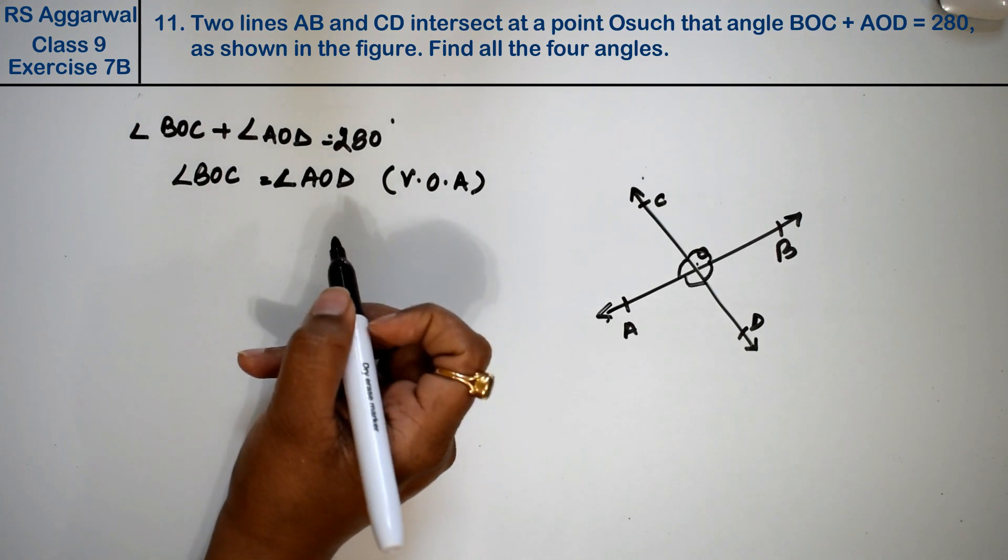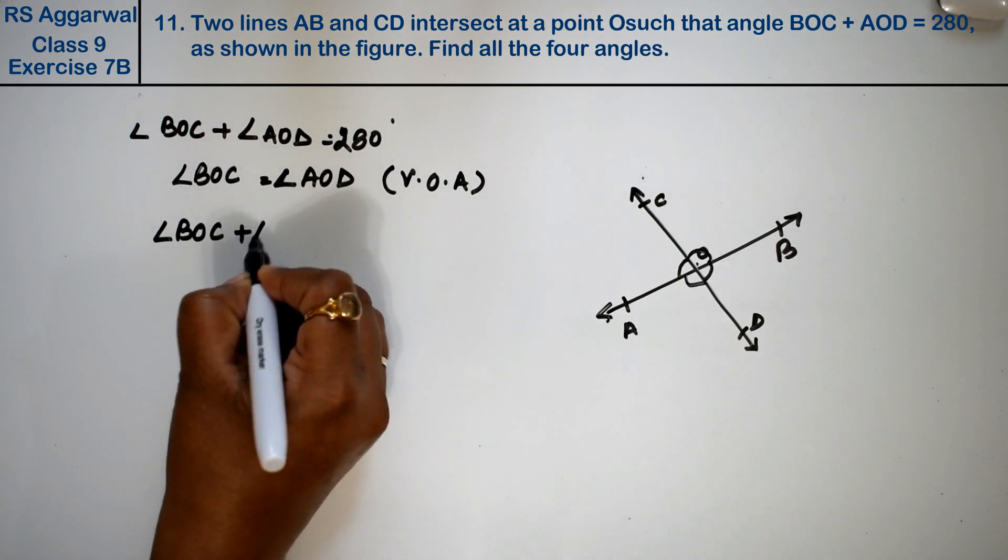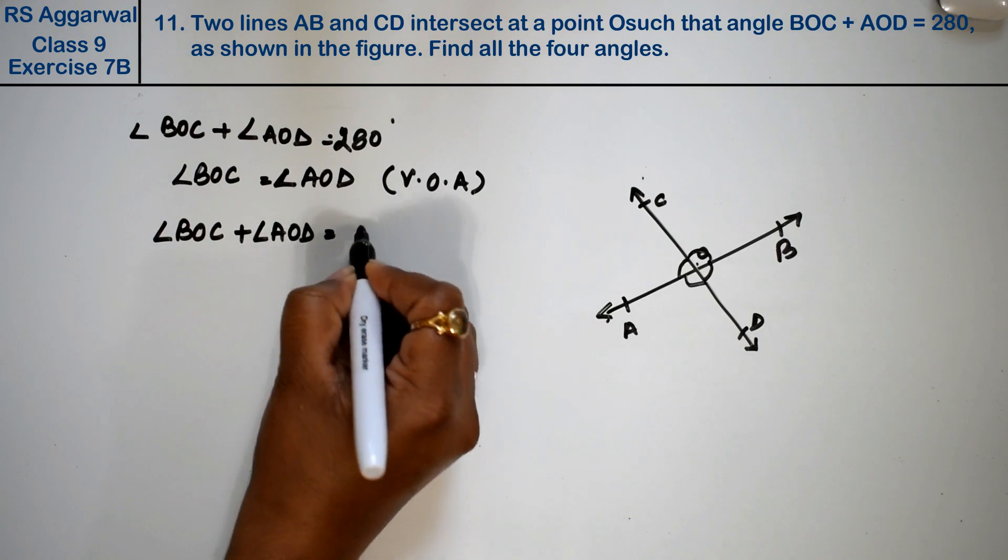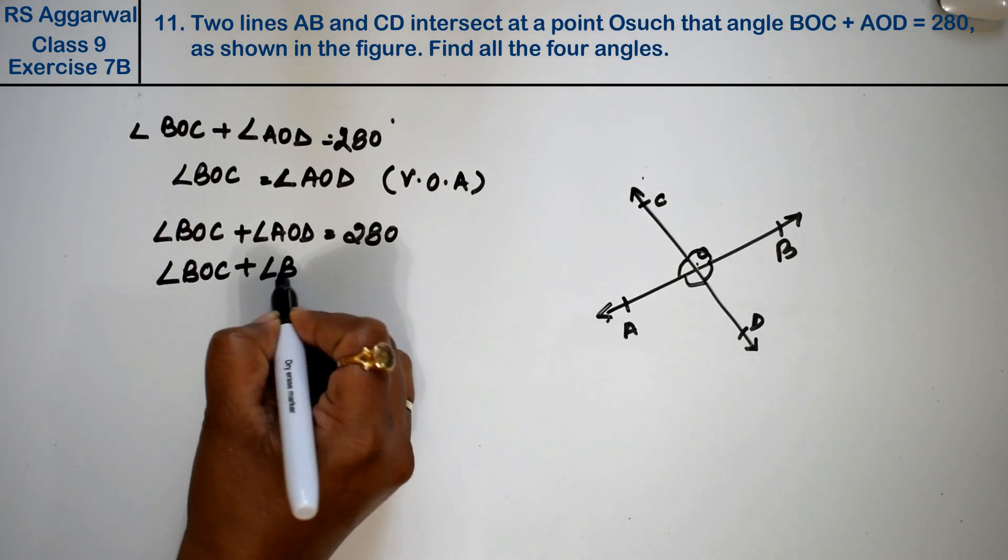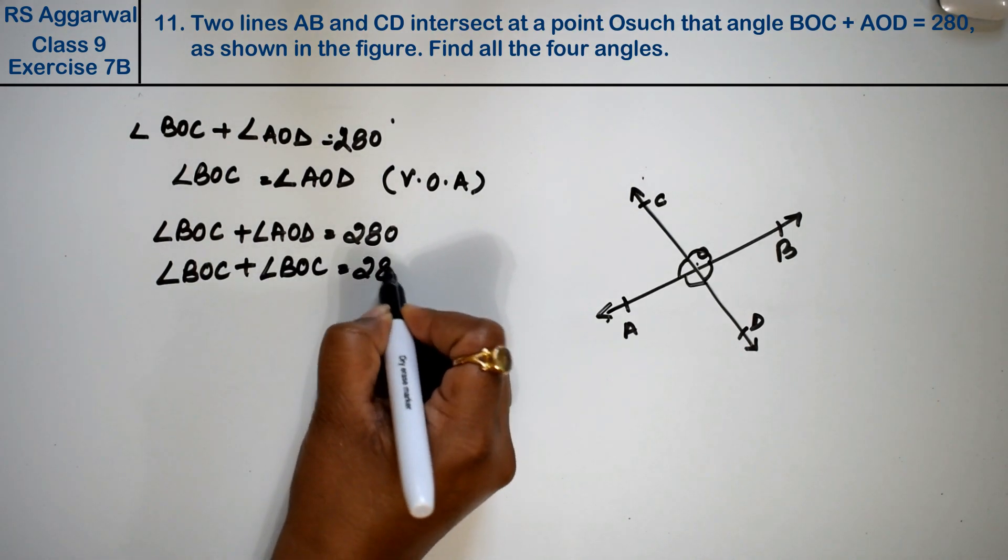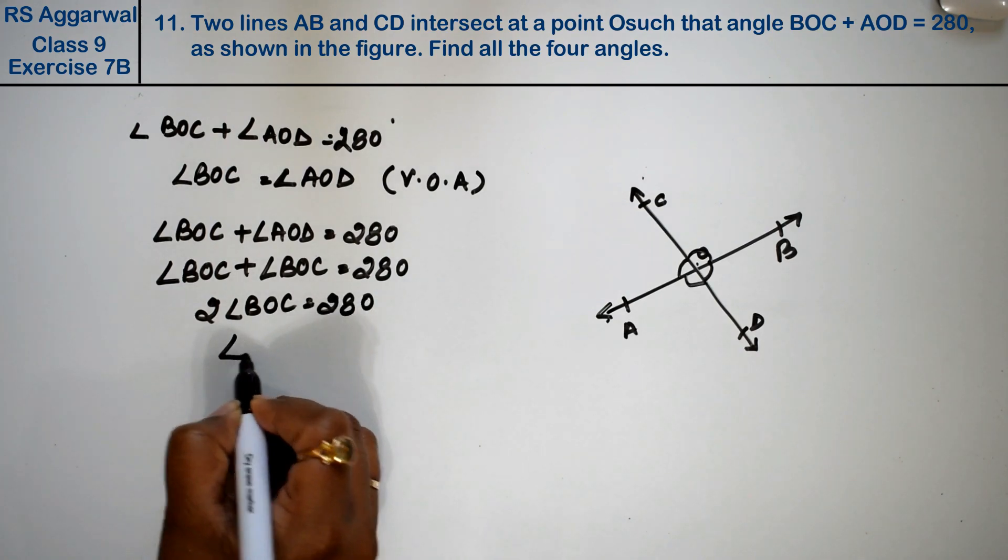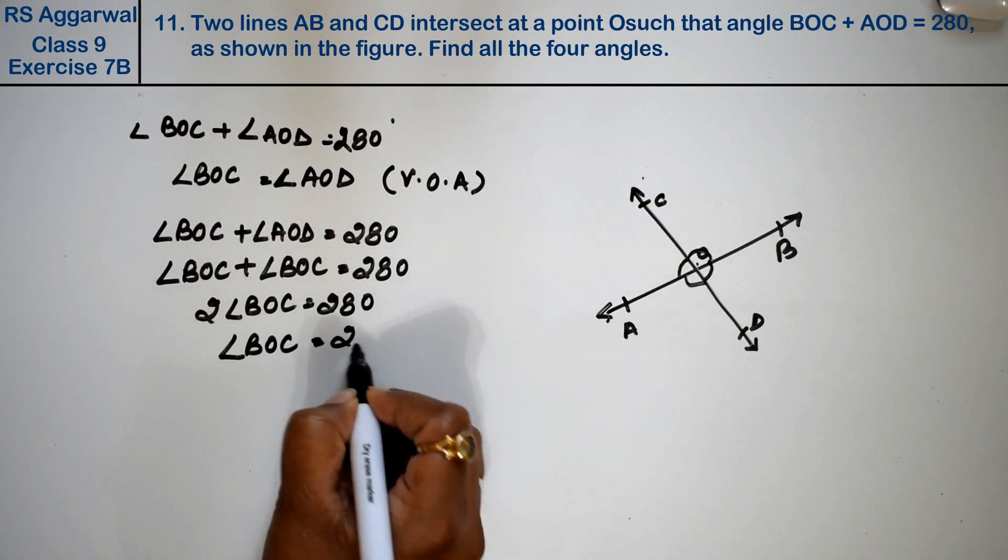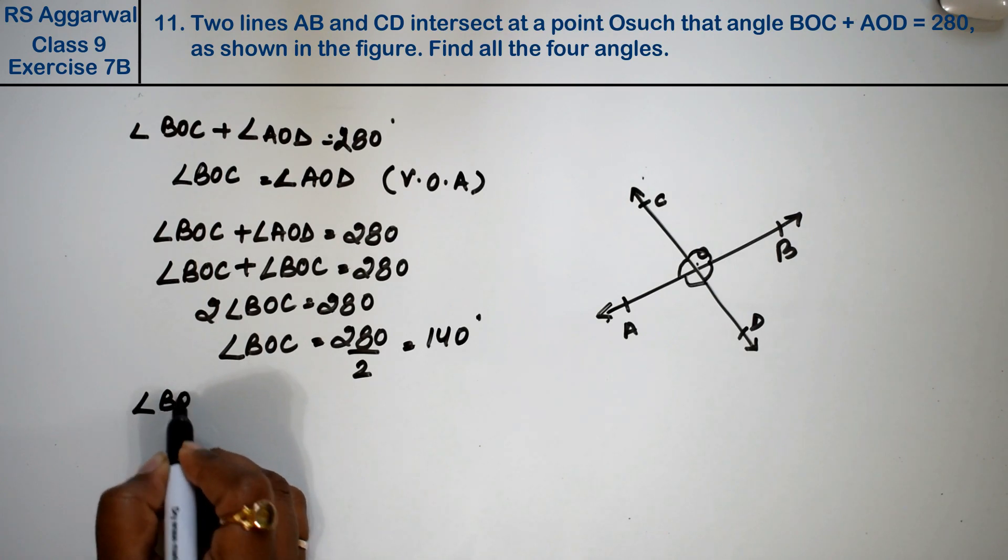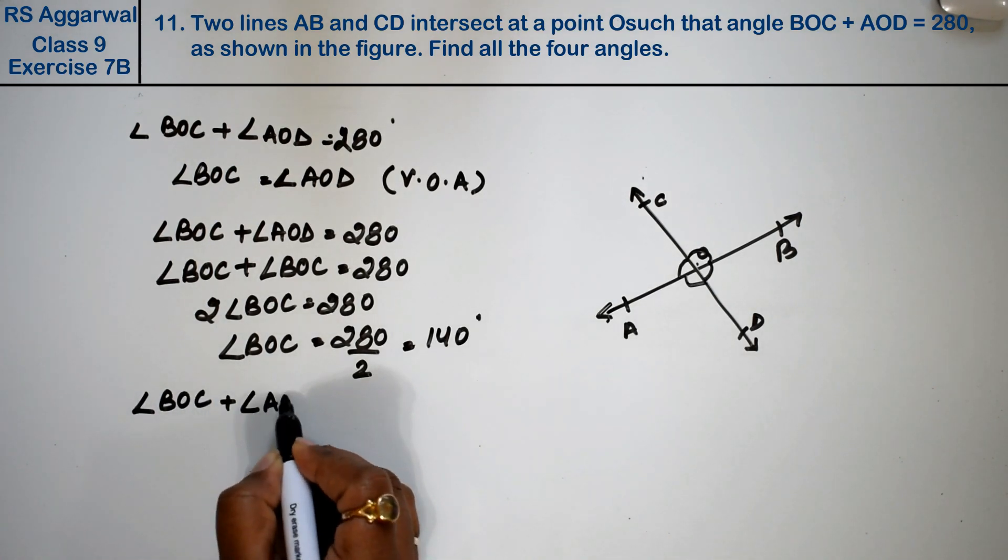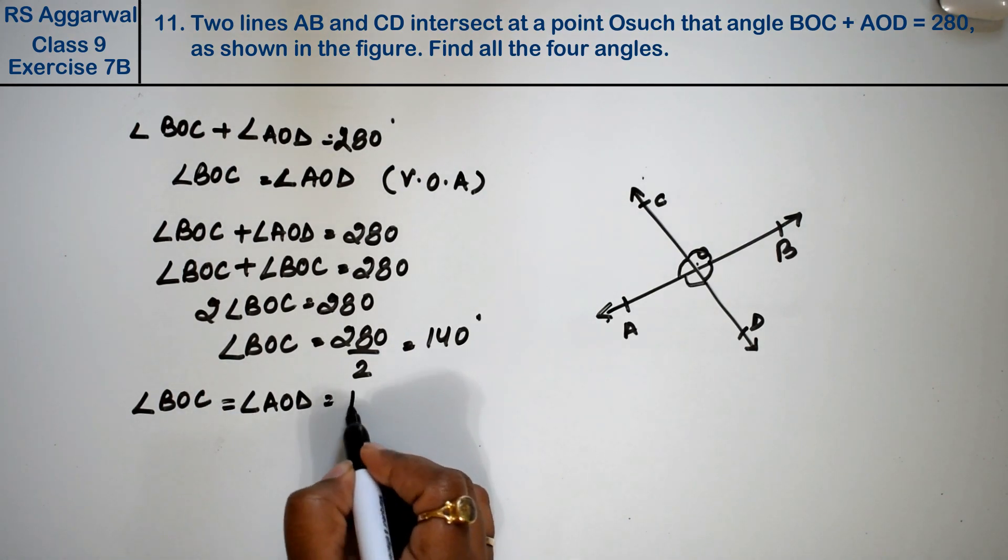Now, we know that both angles are equal, so angle BOC plus angle BOC equals to 280 degrees. Therefore, angle BOC equals to angle AOD equals to 140 degrees.